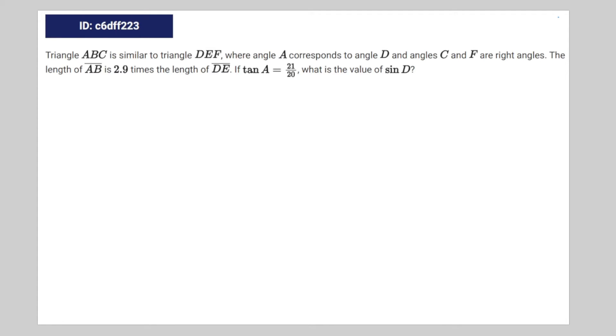You're given the following question. Triangle ABC is similar to triangle DEF, where A corresponds to angle D, and angles C and F are right angles. The length of AB is 2.9 times the length of DE. If tan of A is equal to 21 over 20, what is the value of sine D?